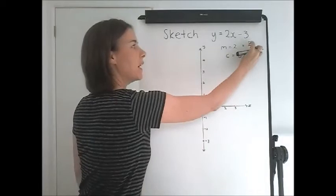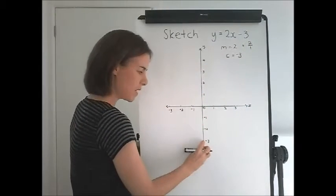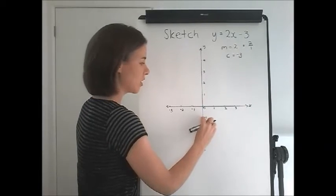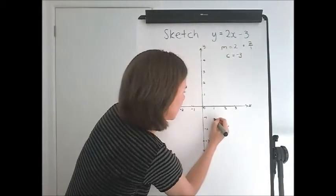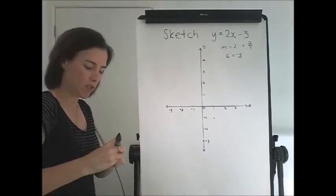And from there, we rise 2 and run 1. So from here, we go up 2, positive 2 means up, and across 1. It's positive as well, so we'll step to the right. And that gives us another point that our graph passes through.